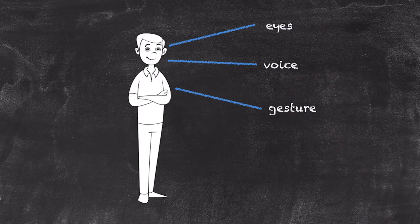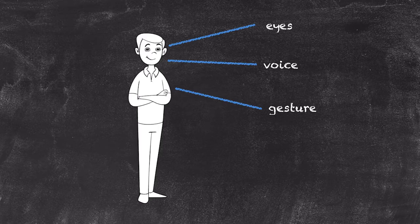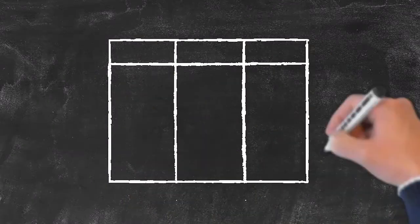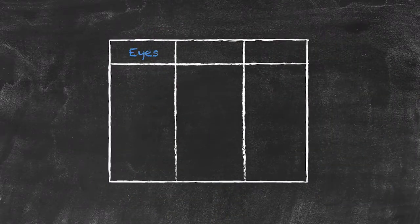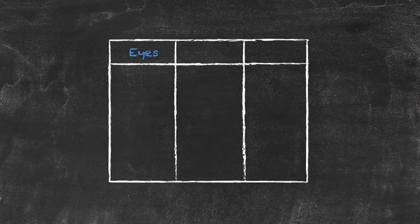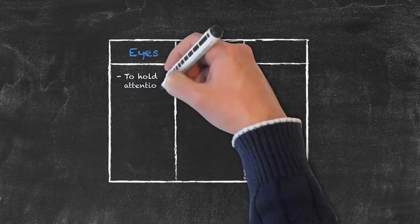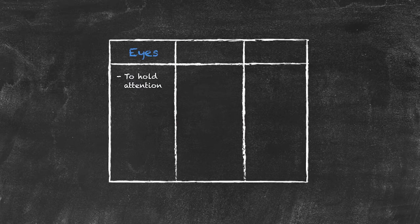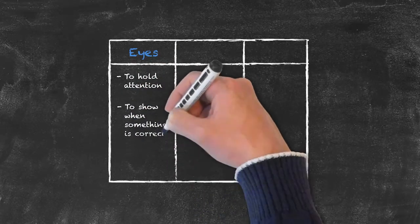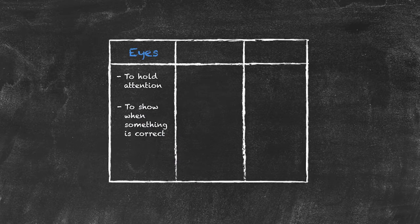So let's take each of these in turn and see how they can be used to help with the management of the classroom. Starting with the eyes, first of all, the eyes can be used in a number of ways. They can certainly be used to hold attention. The eyes can be used to show when something is correct.